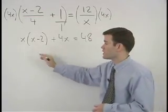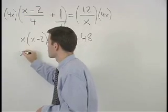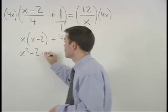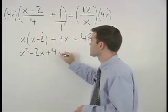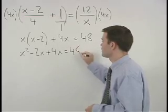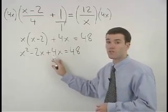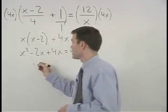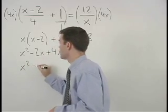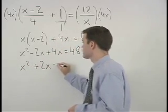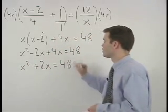Distributing through the parentheses, we have x squared minus 2x plus 4x equals 48. And simplifying further on the left side, we have x squared plus 2x equals 48.